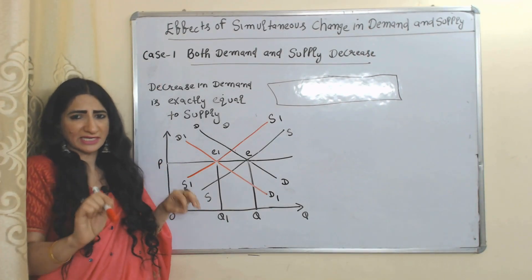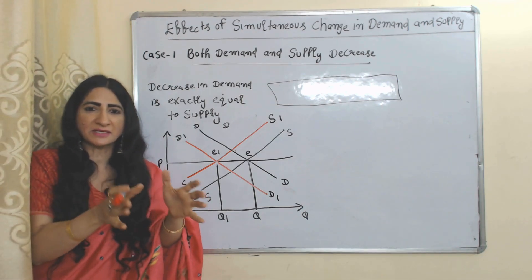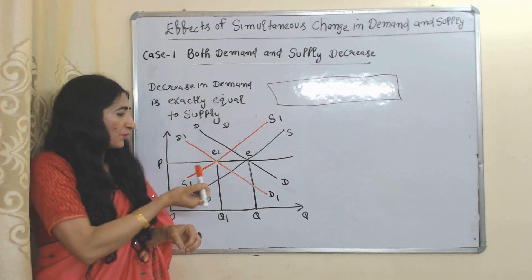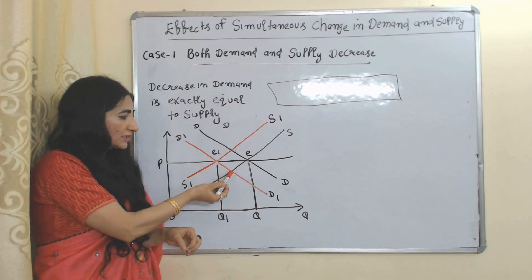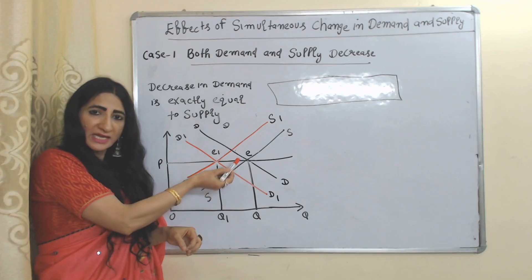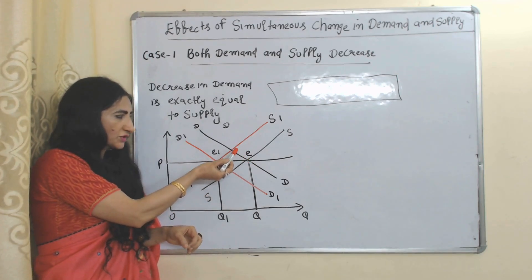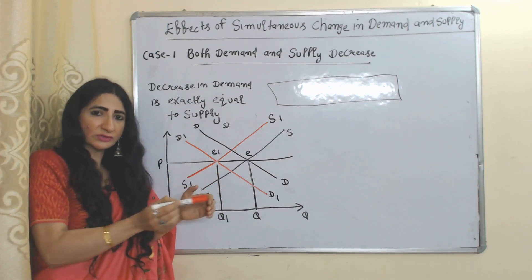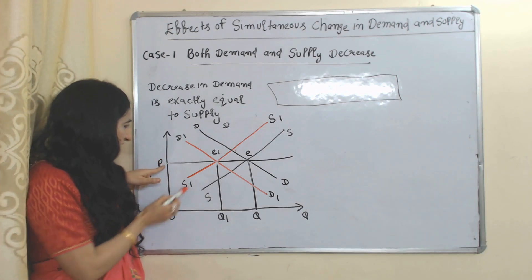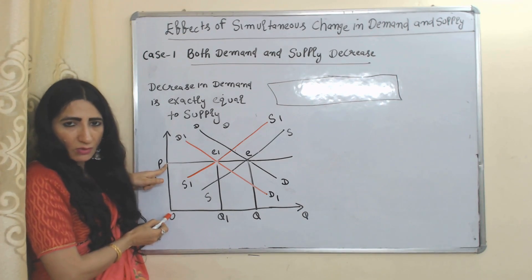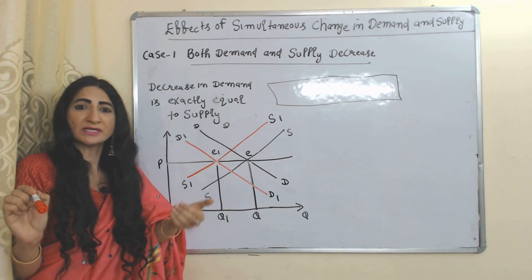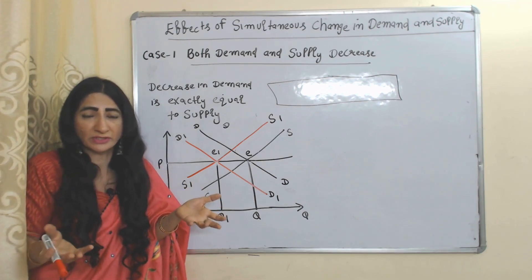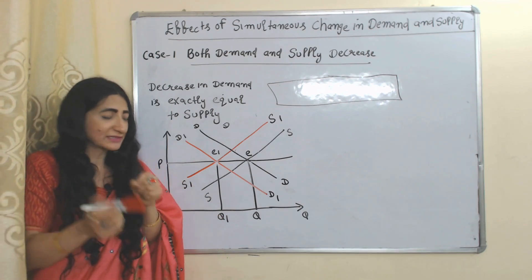Now we'll see the effects of a simultaneous change in demand as well as supply. First case: decrease in demand exactly equal to decrease in supply. E is our initial equilibrium point. Suppose demand decreases and the demand curve shifts backward; at the same proportion, supply also decreases and the supply curve also shifts backward. E1 is our new equilibrium point. When demand and supply reduce equally, our price will remain constant at OP. Price only fluctuates when demand is more than supply or supply is more than demand — when both reduce at equal proportion, price remains constant.